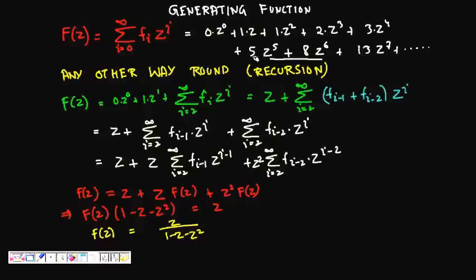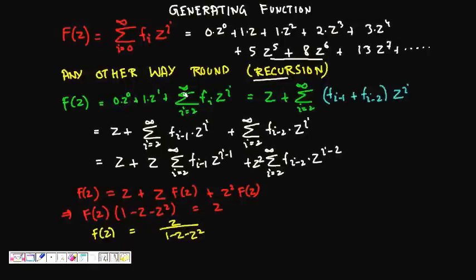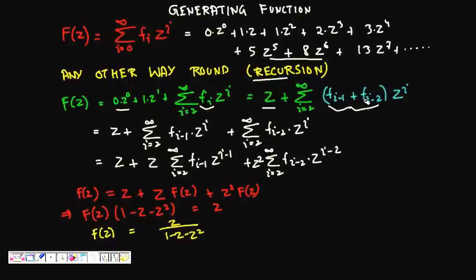Now we try to manipulate this infinite series using the recursion present in the Fibonacci series. F(z) = F(0)·z^0 + 1·z^1 + summation from i=2 to infinity of F(i)·z^i. The first term is 0, so we have z plus the sum. Then we expand F(i) as F(i-1) + F(i-2).